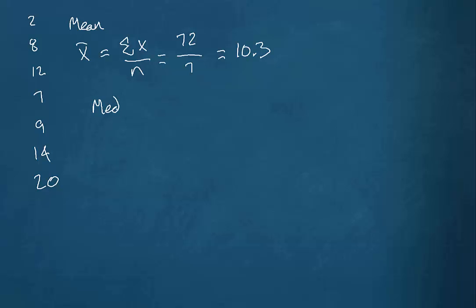Sometimes a better measure of center is the median. And there are two ways that we would find the median depending on the data set itself. First of all, we would need to order the data set. So from smallest to largest, if we ordered this data set, we'd have 2, 7, 8, 9, 12, 14, and 20.